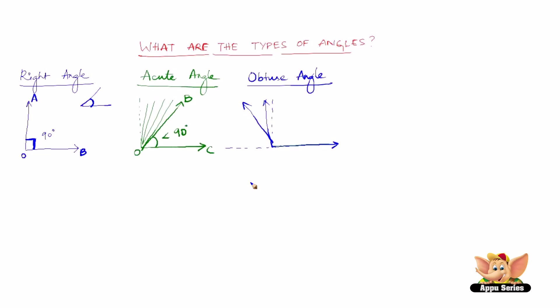So an obtuse angle is an angle which is greater than 90 degrees but less than 180 degrees. We can name this angle FOG, so angle FOG can be anything — let's say 120 degrees. Anything between 90 degrees and less than 180 degrees.